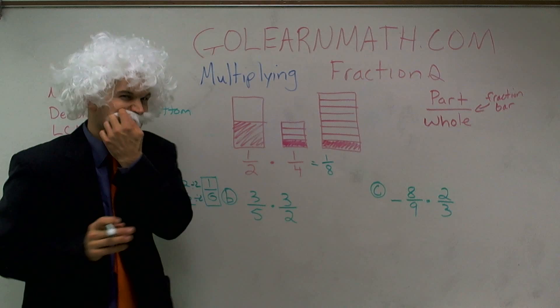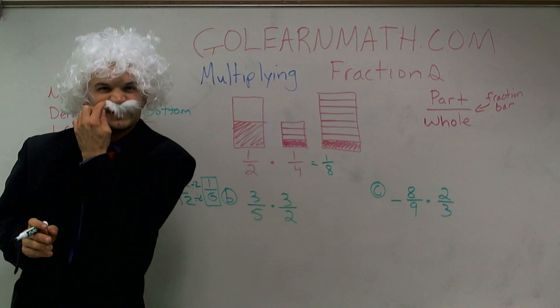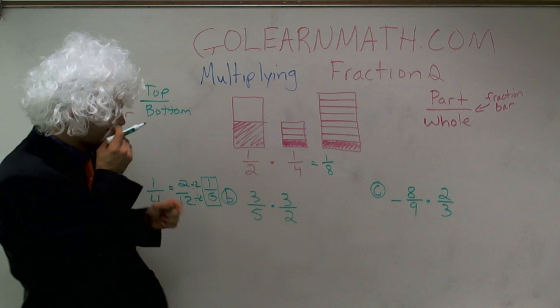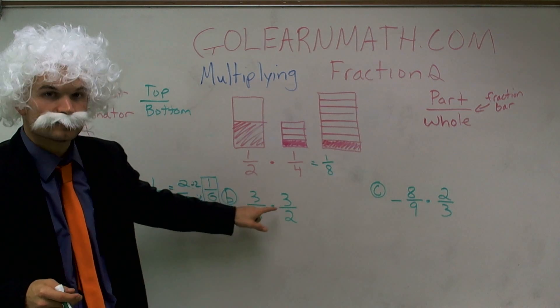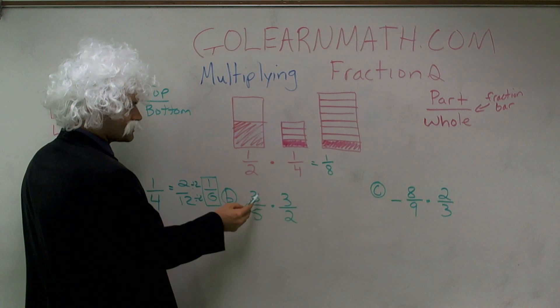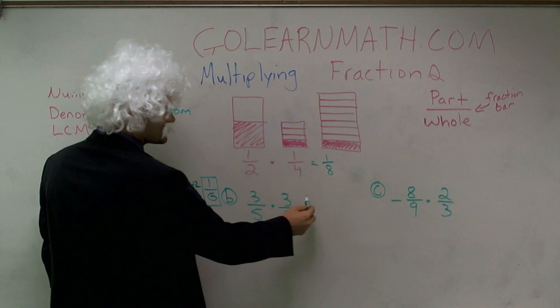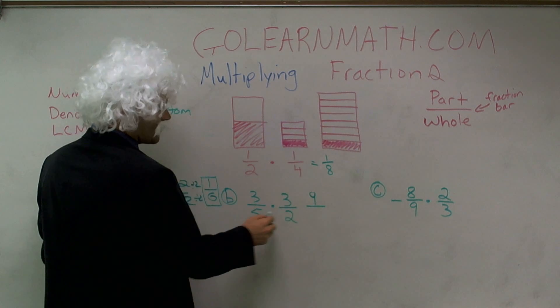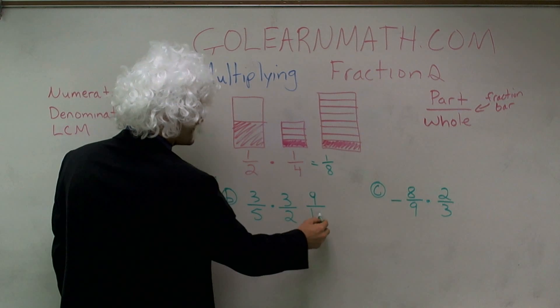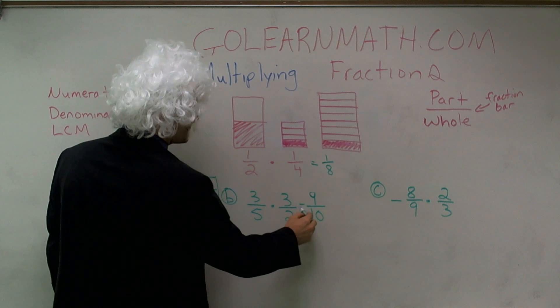Last one: three-fifths times three-halves. I multiply across — three times three is nine, and five times two is ten. So the answer is nine-tenths.